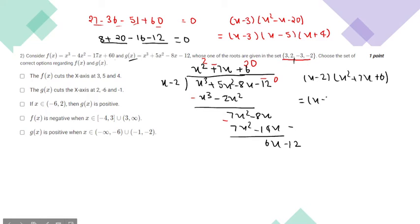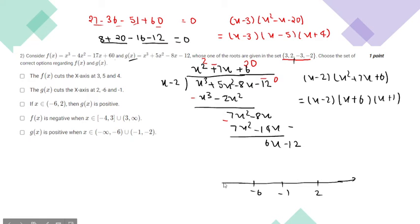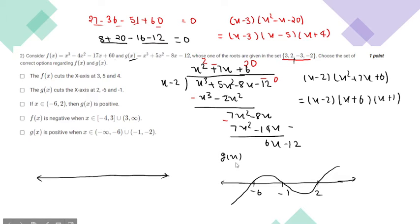Representing g(x) on a number line with roots minus 6, minus 1, and 2, the sign analysis gives: positive, then negative, then negative as we move left to right across the intervals. For f(x) with roots minus 4, 3, and 5, the sign analysis gives: negative, positive, negative, positive for x greater than 5.